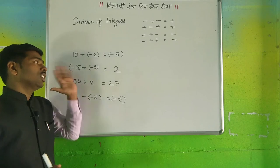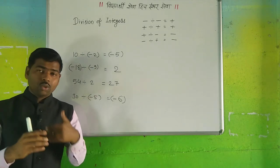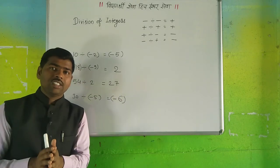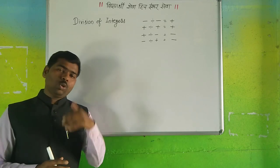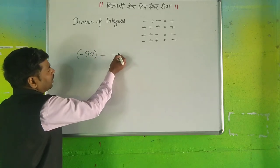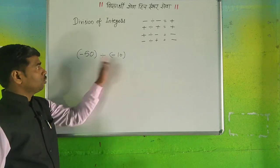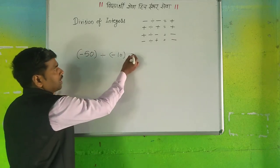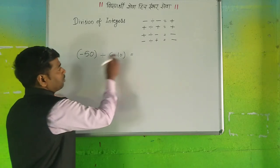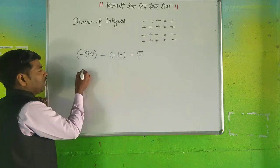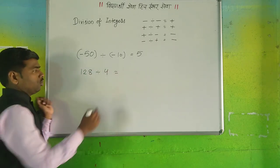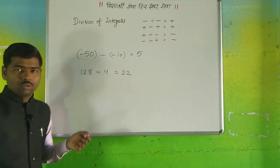This rule for division and multiplication is very important. When we multiply and divide, we must follow the sign rule. For example, minus 50 divided by minus 10 — both signs are the same, so the answer is positive 5. Another example: 128 divided by 4. 4 times 32 is 128 — both are positive, so positive divided by positive is positive, giving us 32.